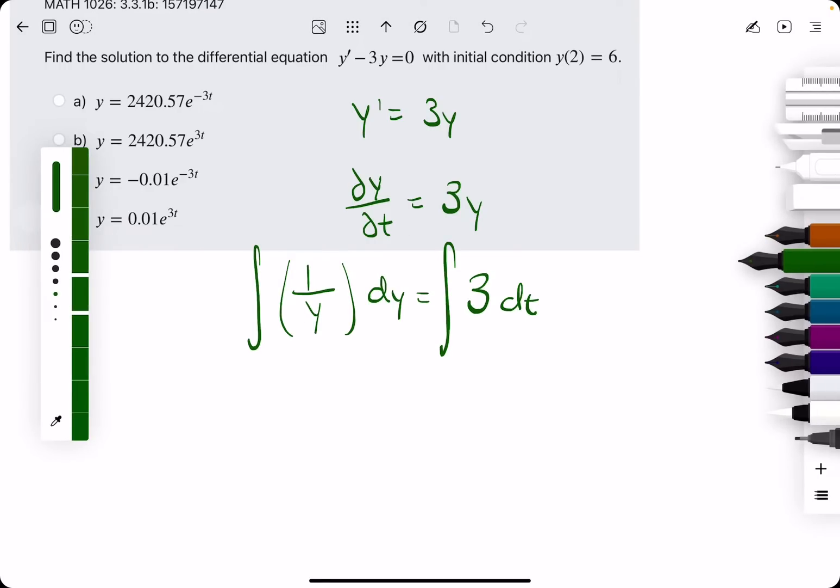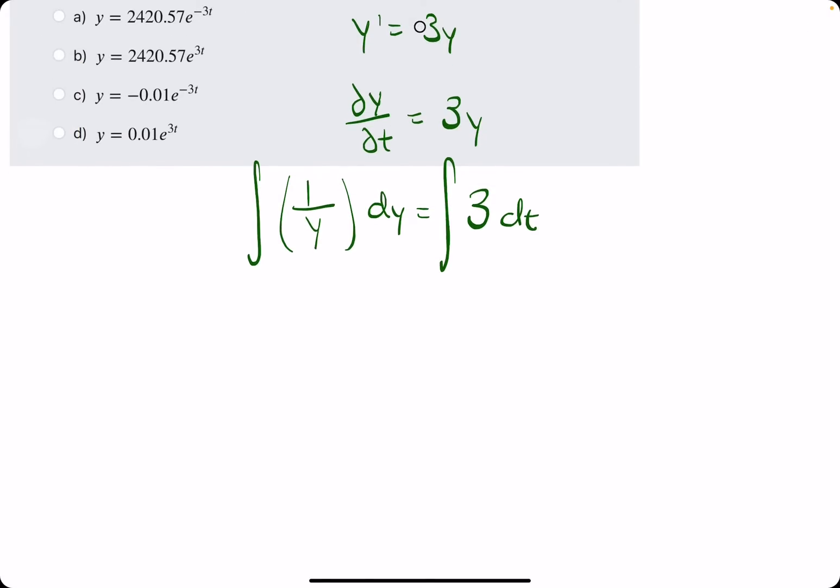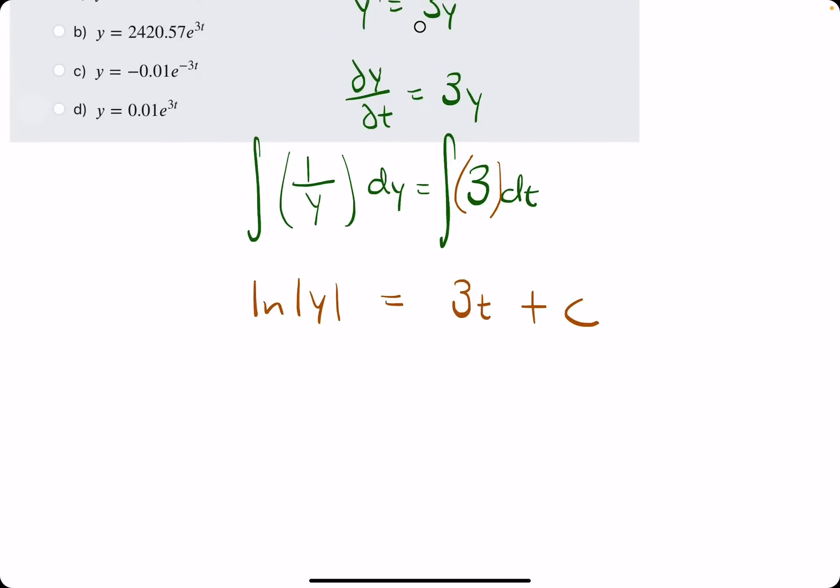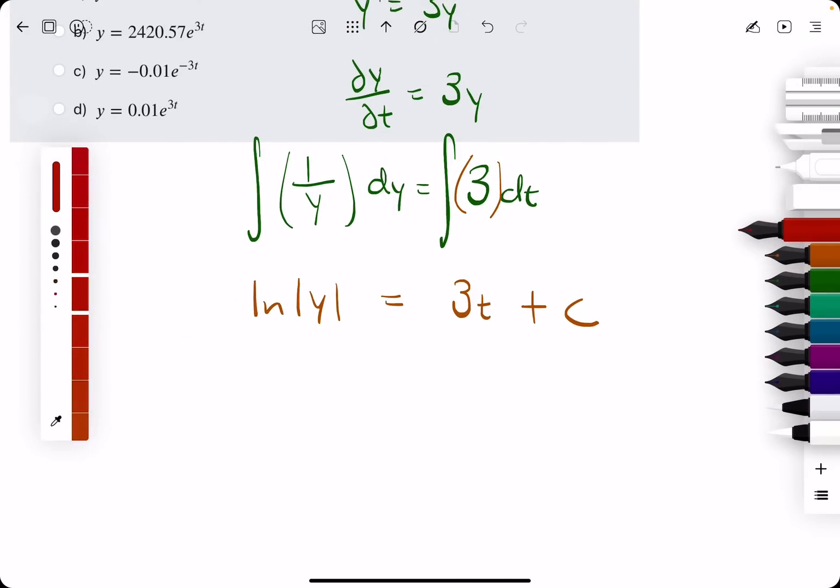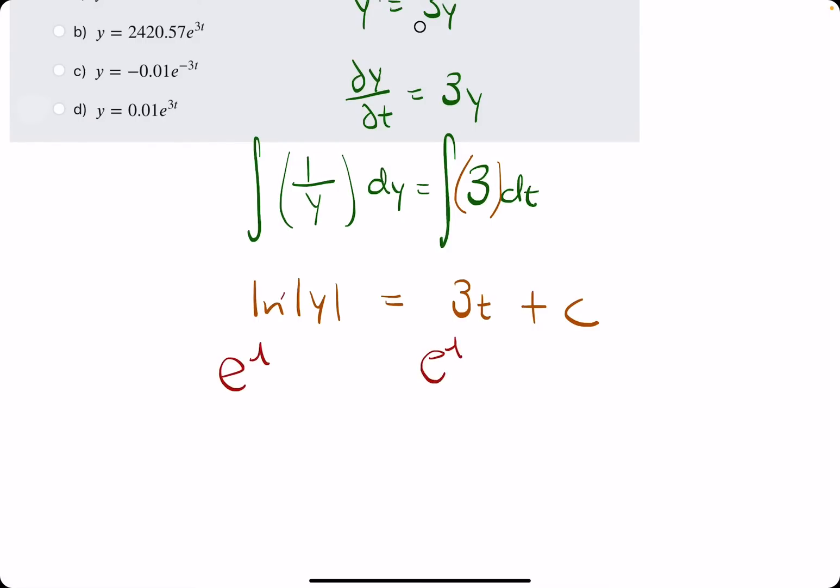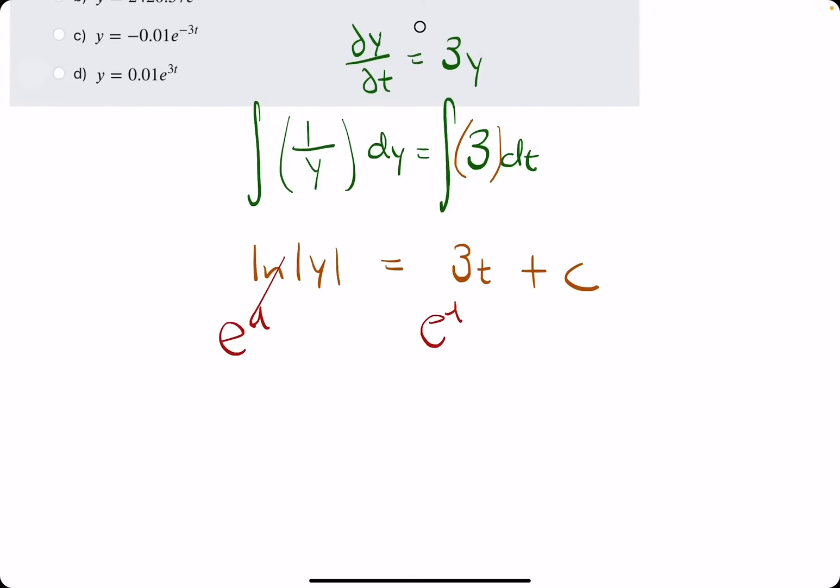So now we are integrating both sides. Antiderivative of one over y is ln of absolute value of y. Three has an antiderivative of three t. Make sure to add plus c. We'll go ahead and solve for y by taking the e and making it the base of both sides.